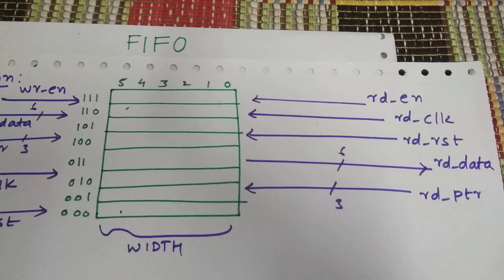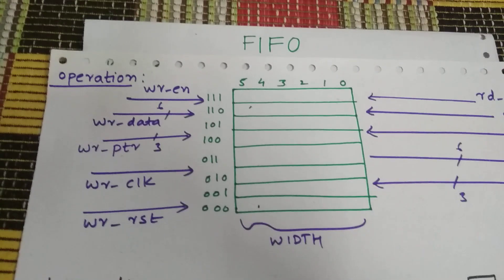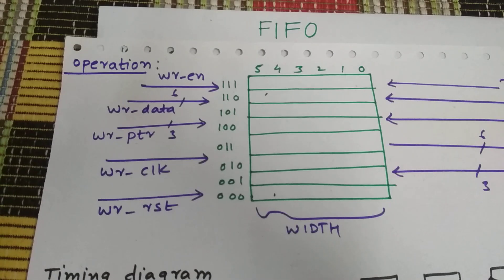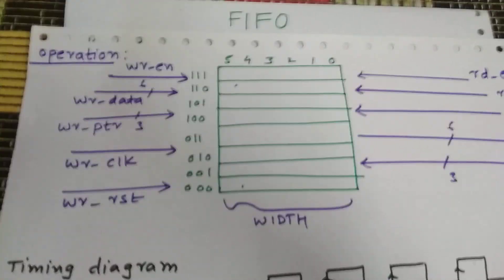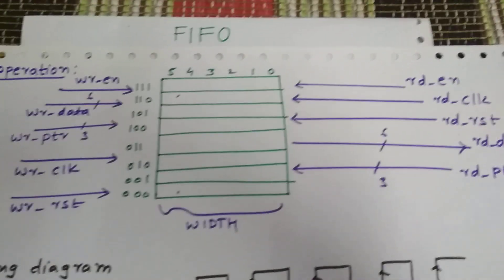So these are the interface signals for a FIFO normally: read enable, read clock, read reset, read data and read pointer, and write enable, write data, write pointer, write clock and write reset. So I'm going to show how a write is done and how a read is done.